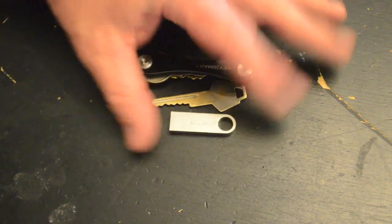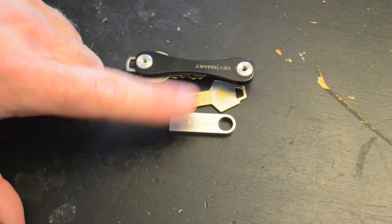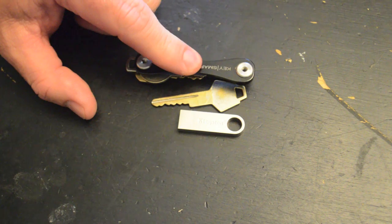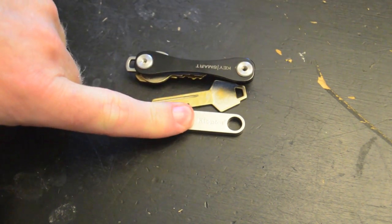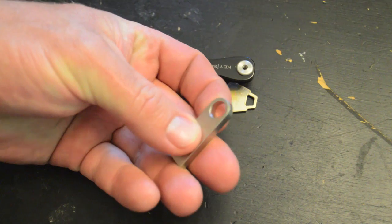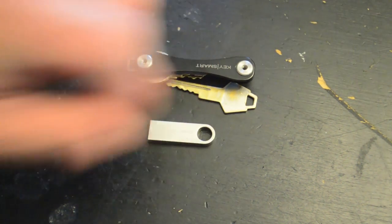So looking at it, the only difference between the Kingston version and the KeySmart version, because it is the exact same thumb drive, is that the KeySmart version has a bushing that fits in here.